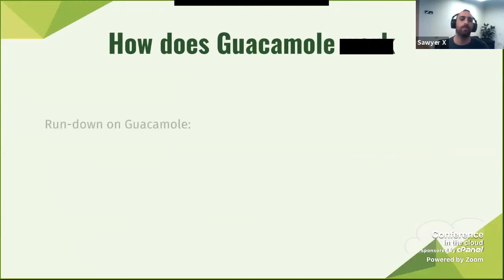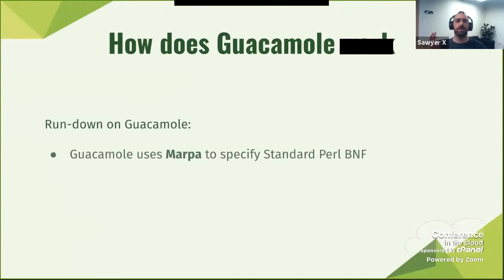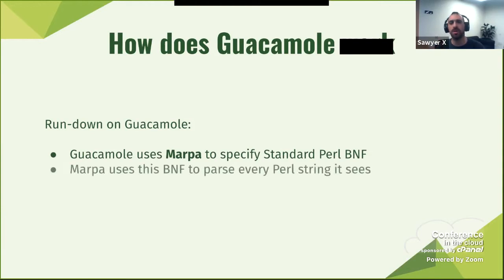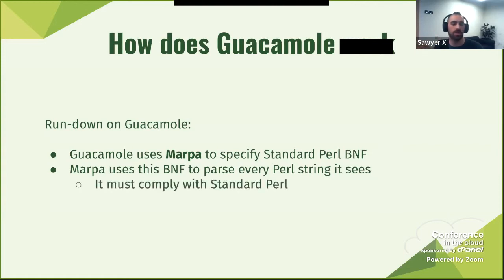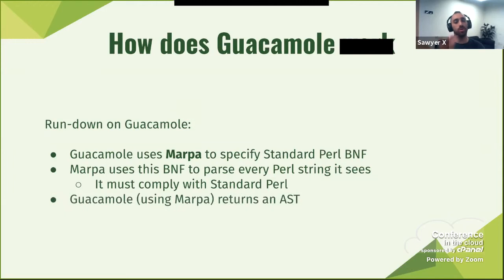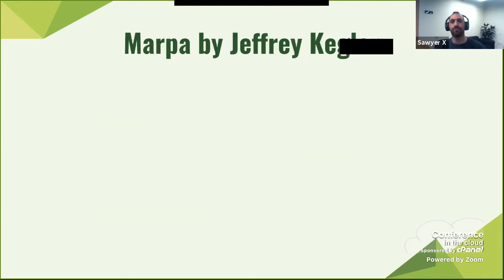So how does it work? The rundown: we use Marpa to specify the standard Perl BNF. Marpa uses the BNF to parse every Perl string it sees, which must comply with the specification. And Guacamole, using Marpa, will return an AST — an Abstract Syntax Tree. You're probably wondering: what's Marpa?